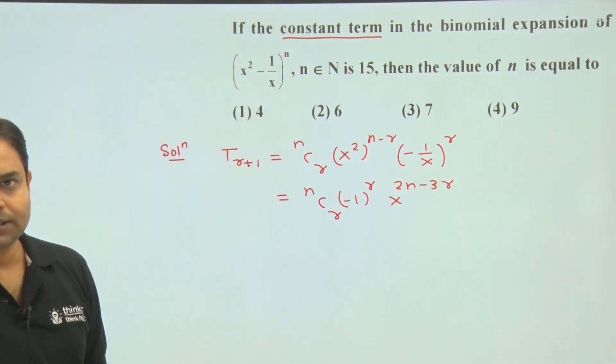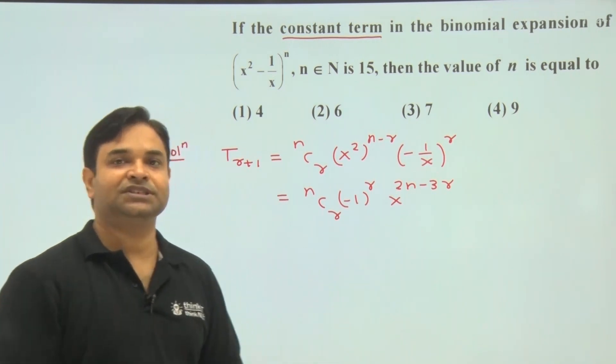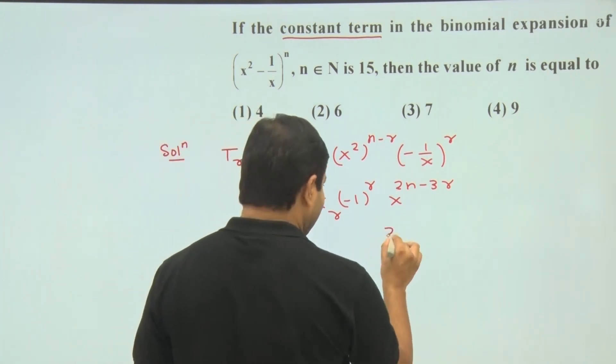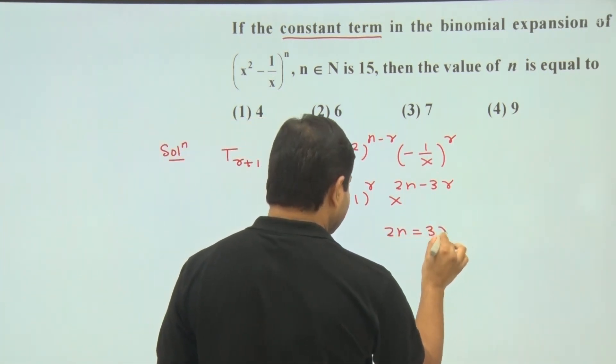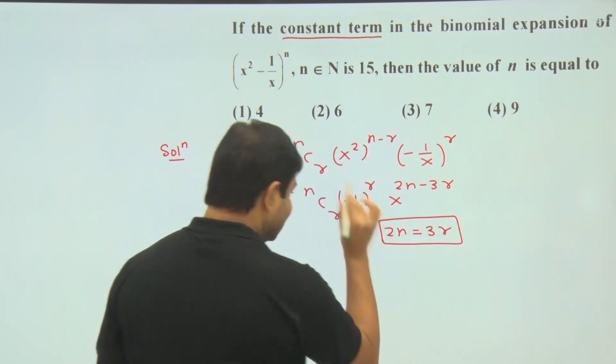Now for constant term, power of x must be zero. So 2n is equal to 3r. This is the required condition to make this term free from x.